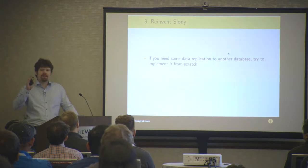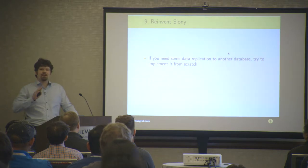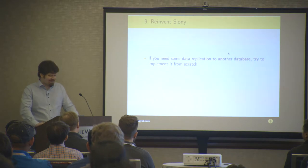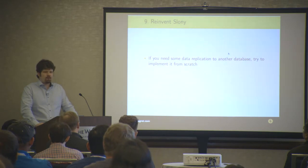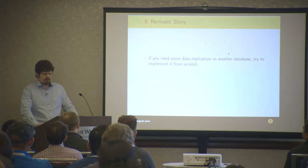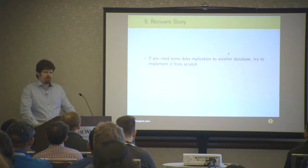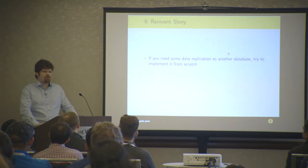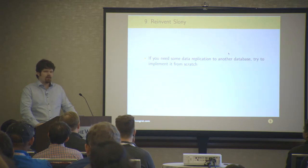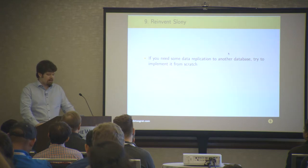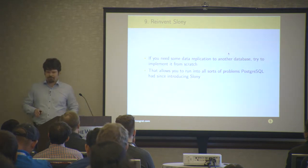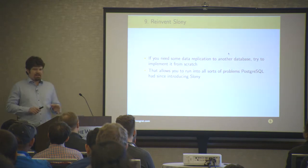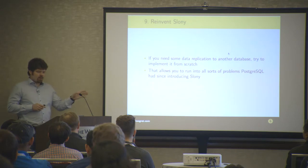Reinvent Slony. Who knows what Slony is? PostgreSQL has replication in core now for quite a nice number of years — since version 9 it's in core, since version 9.1 it's usable. You need to reinvent Slony. Write your own script in Python which takes logs from one machine, puts them to another, and controls applying them. Use a trigger-based approach and write your own, for God's sake. Because it will allow you to run into all the problems PostgreSQL had since the introduction of Slony. Replication should not be easy — replication should be very complicated. So do your own and that will be good.